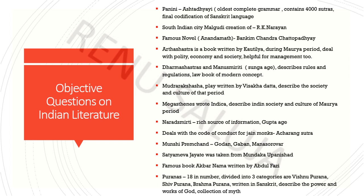Megasthenes एक Greek Historian था, जब वो India आया था Maurya Period के time में, तो उसने India की Society और Culture पर बहुत कुछ लिखा। उसकी famous book है Indica, जो कि एक rich source of information है। Naraspriti, गुप्त काल में लिखी, this is also part of Dharmashastra।